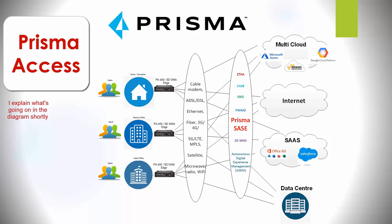But what does it do? Well, it protects your users wherever they may be. You just direct all your traffic to Prisma Access. All user traffic is protected and traverses through the Prisma Cloud, and Prisma Cloud offers a set of connectivity and security services.